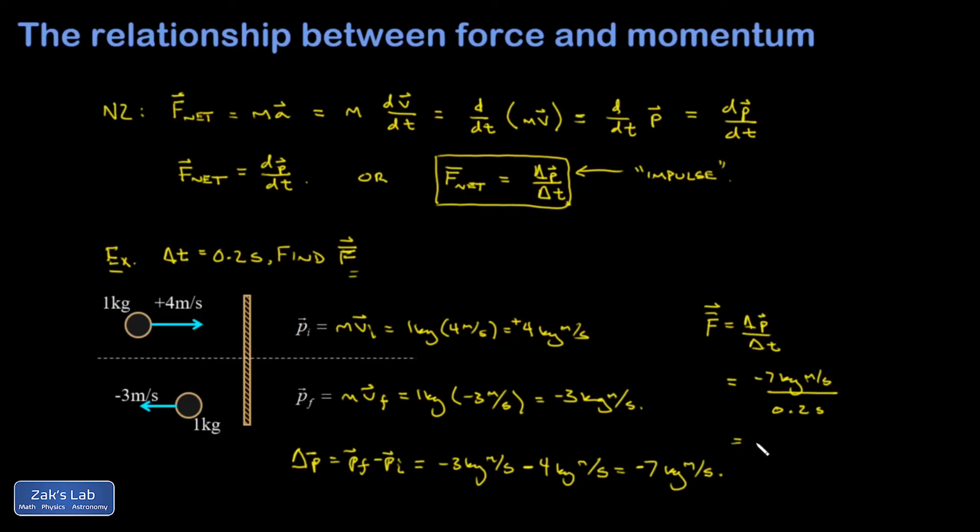That gives me negative 35 kilogram meters per second squared. You should recognize that unit, I hope. I have units of mass multiplied by units of acceleration, which if I go all the way back to N2, reminds me that a kilogram meter per second squared is a Newton. All right, so there's my leftward pointing force on average to turn this thing around.